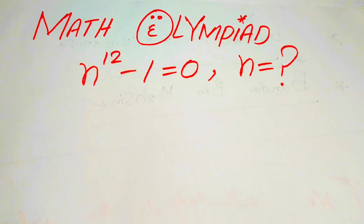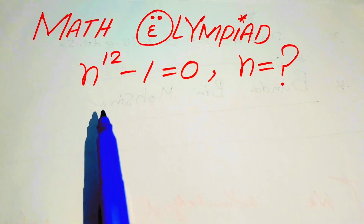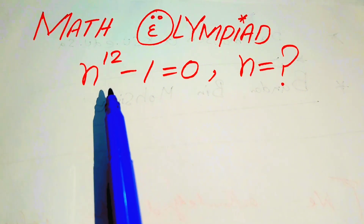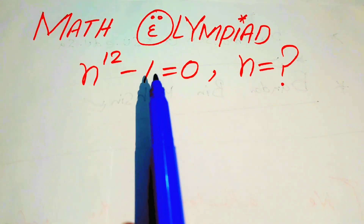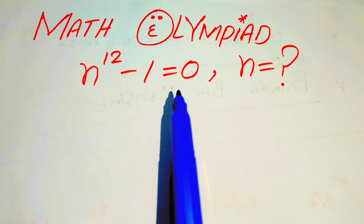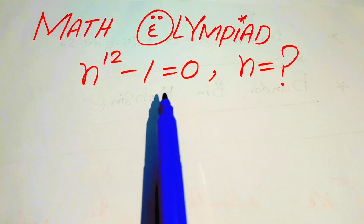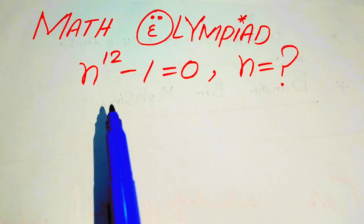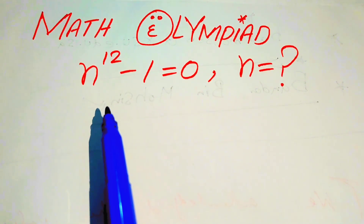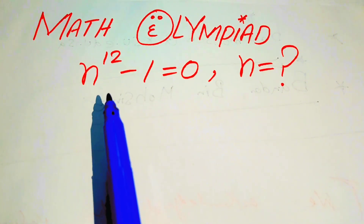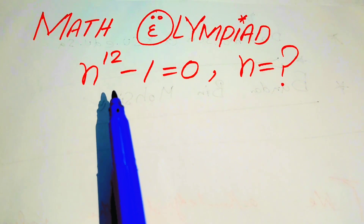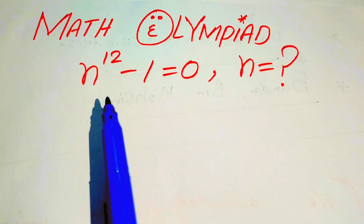Hello everyone, welcome to solve this math Olympiad algebraic challenge. Here we have n to the power of 12 minus 1 equals to 0. So here we find all the 12th roots of this equation.